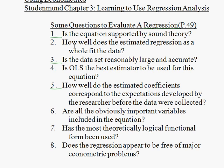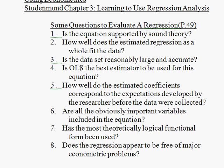Third, is the dataset reasonably large and accurate? Where did the data come from, do we trust the numbers, and how many observations are there — three or four, or hundreds or thousands? A larger dataset gives us more confidence in the results. Fourth, is ordinary least squares the best estimator for this equation? Sometimes minimizing the sum of squared residuals is the best method, and sometimes it is not. We'll look at that in lecture five — sometimes OLS is good, sometimes you should use other methods.